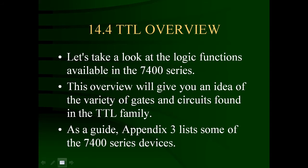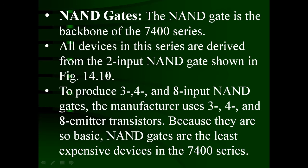We are going to study these different types of TTL ICs, and the NAND gate is the backbone of the 7400 series. All devices in this series are derived from the 2-input NAND gate. To produce 3, 4, and 8-input NAND gates, the manufacturer uses 3, 4, and 8-emitter transistors. Because they are so basic, NAND gates are the least expensive devices in the 7400 series. Various types of NAND gates are available: 2-input, 3-input, 4-input, and maximum 8-input.